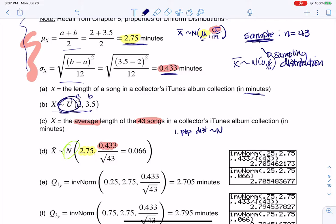Our population distribution was uniform, so I didn't get normality that way. But I did get it from the central limit theorem, which says that your sample size has to be greater than or equal to 30, and mine was 43, so I'm good to go.